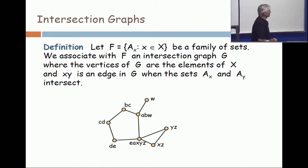So I need a definition. Anytime you have a family of sets, any family of sets, you can associate with this family an intersection graph. You make a vertex for every set, and then you make two vertices adjacent when the sets intersect.